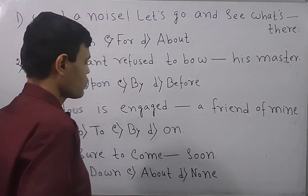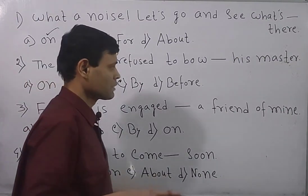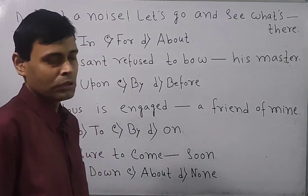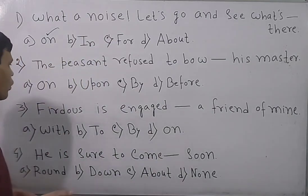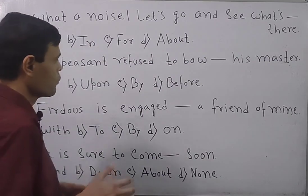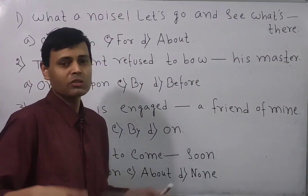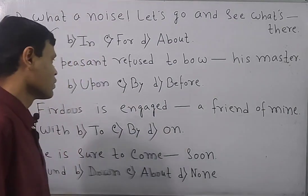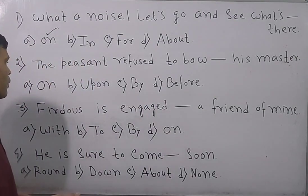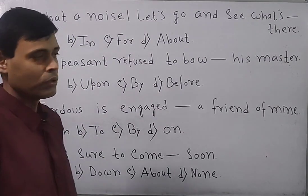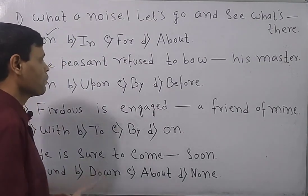The best way to select the preposition is that bow means in front of someone. So, out of the four options—on, upon, by, before—before suggests in front of, before someone or in front of someone. Neither by, nor upon, nor on suggest in front of. So, the answer will be before.